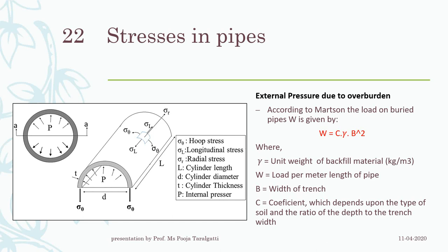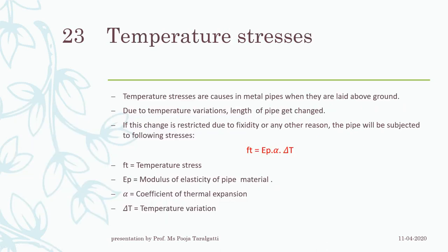Next: external pressures, which are mainly due to the overburden on the pipeline. Since approximately 90% of conveyance work is buried underground, overburden is always a major stress. According to Marston's formula, the external load is: W = C × γ × B², where γ is the unit weight of the backfill material, B is the width of the trench in which the pipeline is laid, and C is a coefficient depending on the soil type and the ratio of depth to trench width.